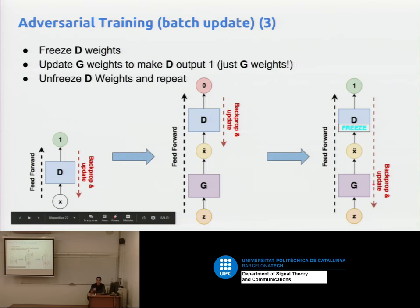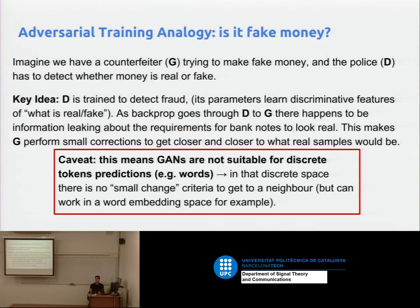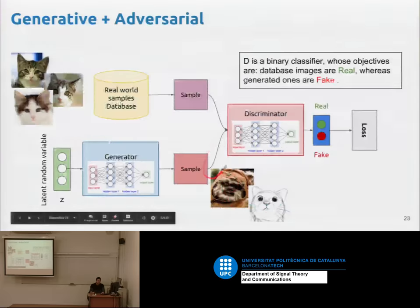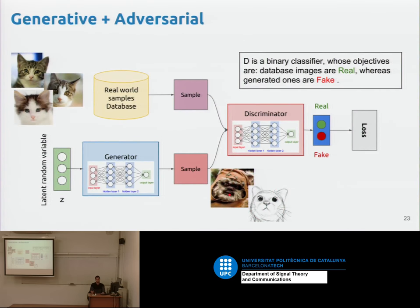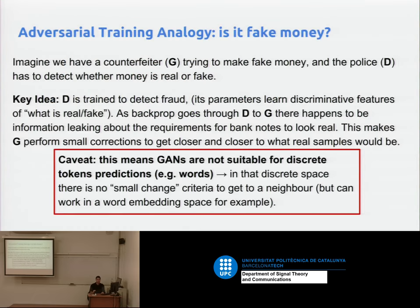This makes G perform small corrections, batch by batch, slowly converging into something more realistic. That's why GANs — working with this mechanism of continuous leak of information — don't work with discrete distributions like words. There's no sense of going from the word 'circle' to the word 'square' slightly — you jump suddenly in a discrete space. Generative adversarial networks are for continuous data like real-valued images, waveforms, and embeddings.